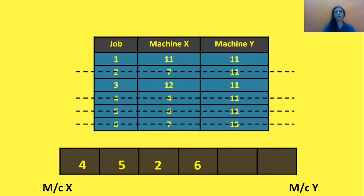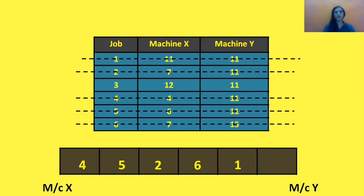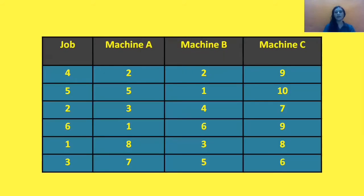The next minimum processing time is 11, and 11 appears three times. We always give priority to machine 1, that is machine X, so we go with the first 11, corresponding to job 1. We allocate job 1 on machine X and write 1 after 6 in the grid. Now only job 3 is left, and there is only one vacant place in the grid, so we directly put job 3 there. This way we have sequenced all the jobs. We then create a table writing the sequence and the processing time of each job on all three machines.